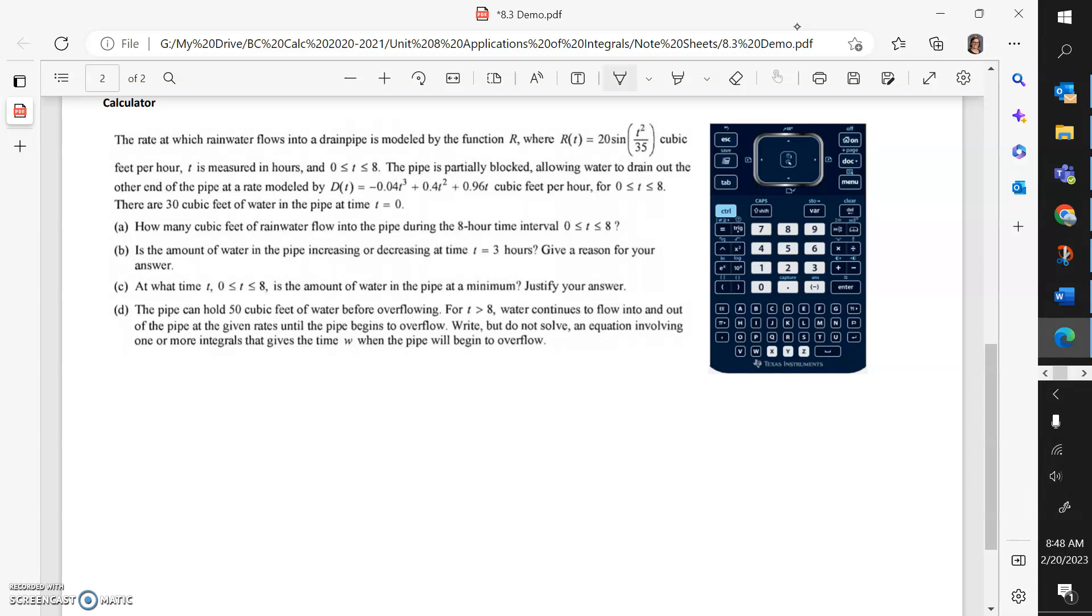The first thing I would recommend is go to your home screen, start a new document and open a graphing screen. On your graphing screen, save R as Y1 of X equals 20 times sine of X squared over 35. And then there's another equation that's coming up, so we're saving that.